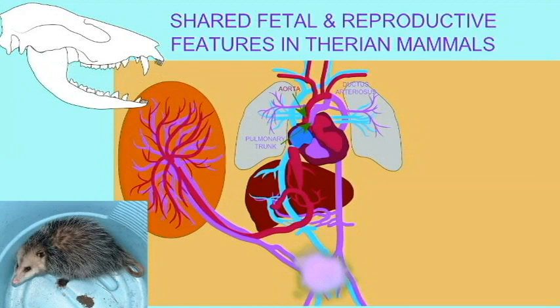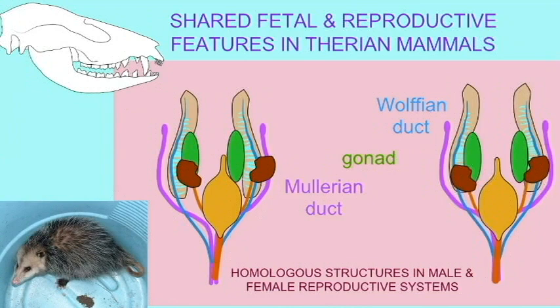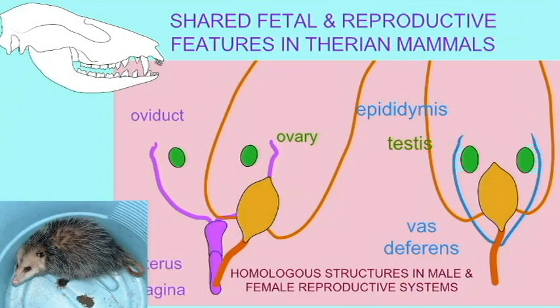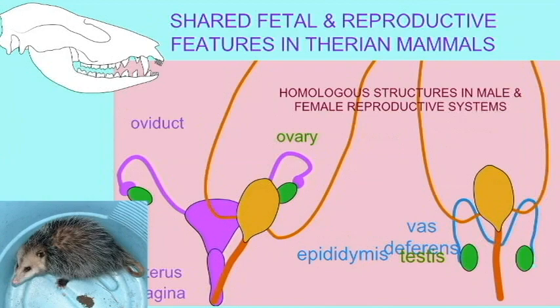A number of other changes of the reproductive system are shared as well, such as modifications of the oviduct, modifications to the ancestral estral cycle, the reduction of the cloaca, the descent of the testes further into the pelvis, and the migration of the penis from the cloaca. These are shared within Therian mammals.